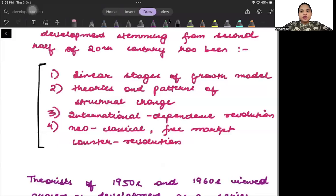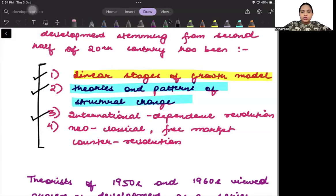The first one is called the linear stages of growth model. The second is theories and patterns of structural change. Thirdly, we will talk about the international dependence revolution. And lastly, we are going to talk about the neoclassical, which is also called the free market counter revolution.